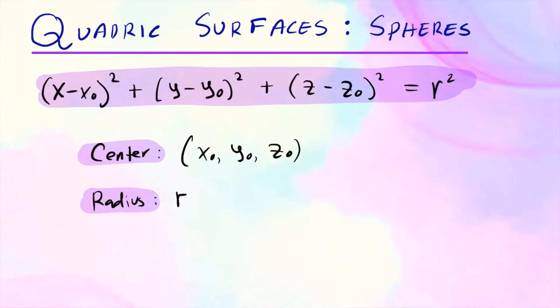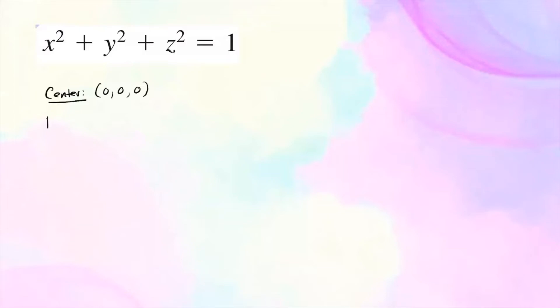Let's take a look at some examples and do some rough sketches. Here's an equation of a sphere — every variable is squared, they're all positive, and it equals 1. So in standard form, the center of this sphere is going to be (0, 0, 0) — your x₀, y₀, and z₀ are all zeros. And the radius of this sphere is going to be 1.